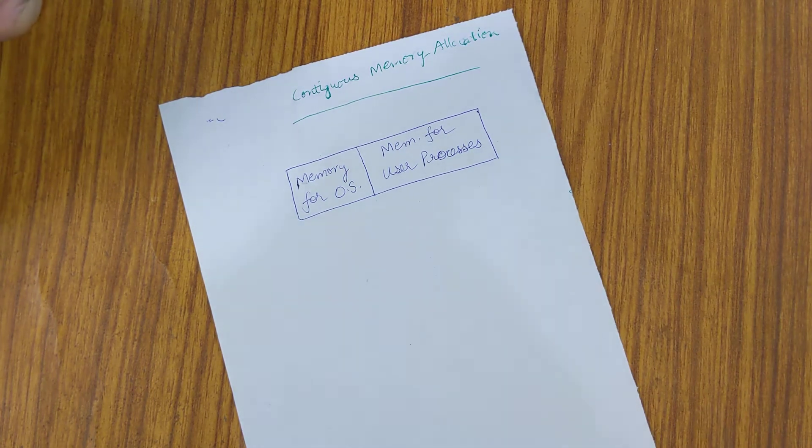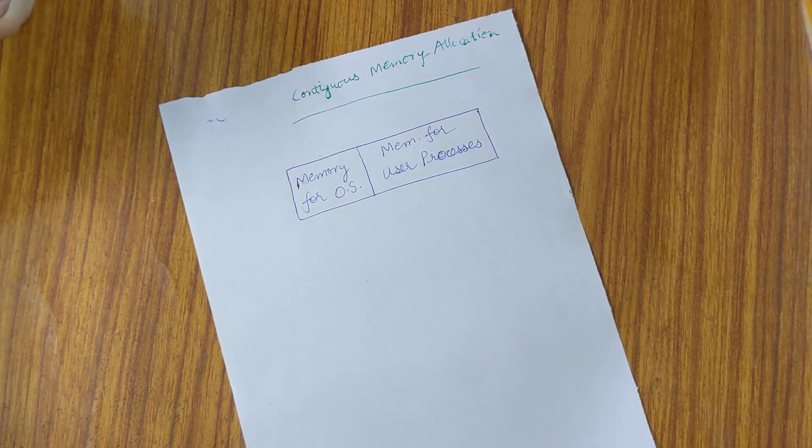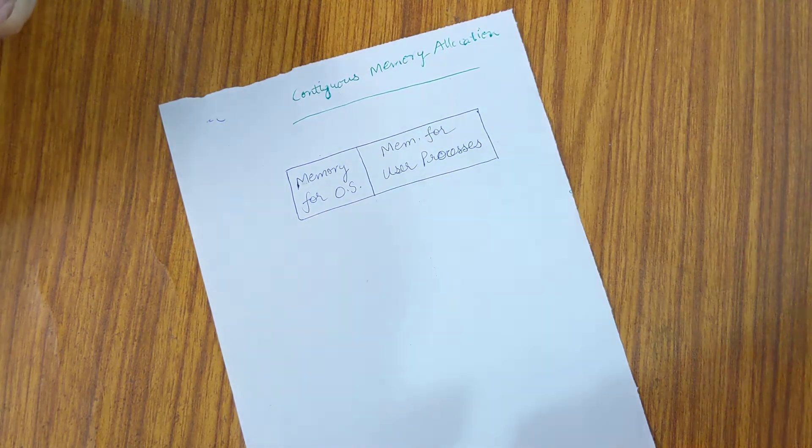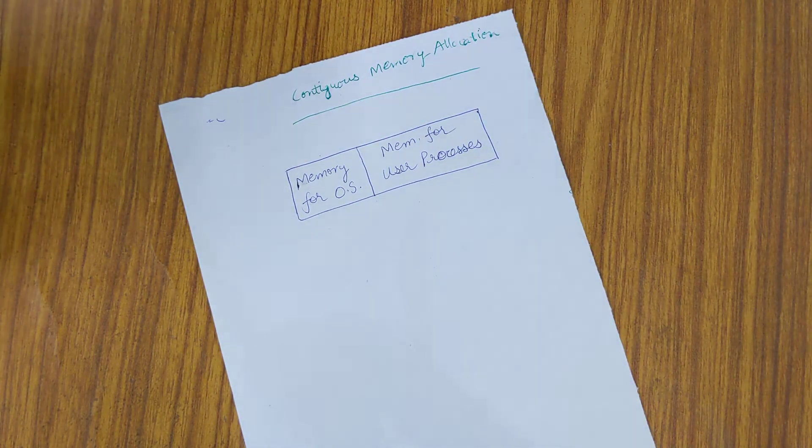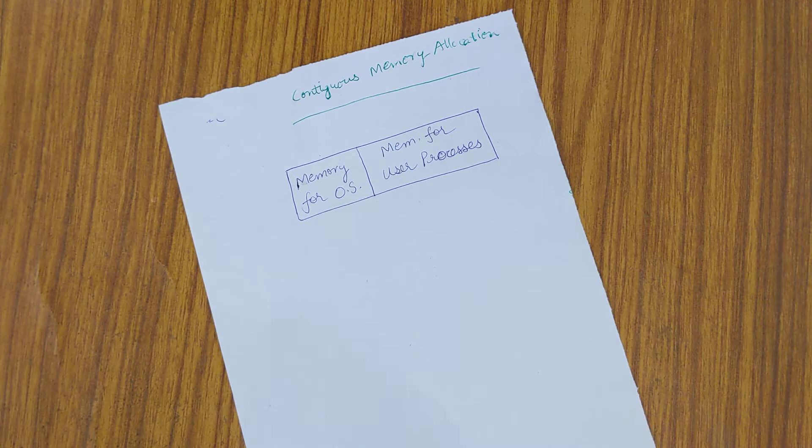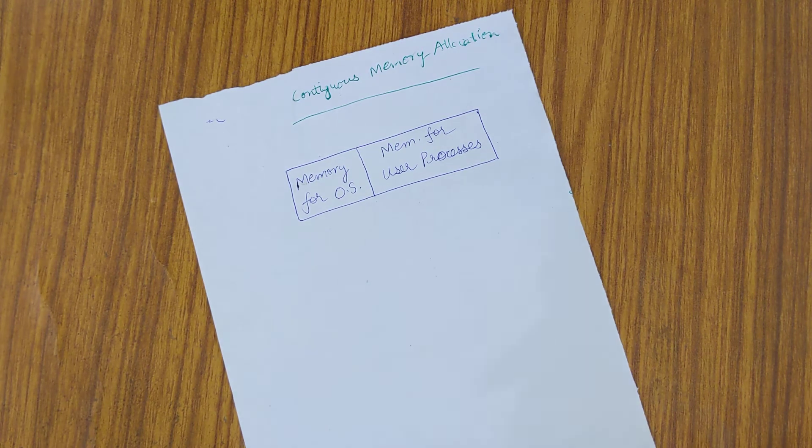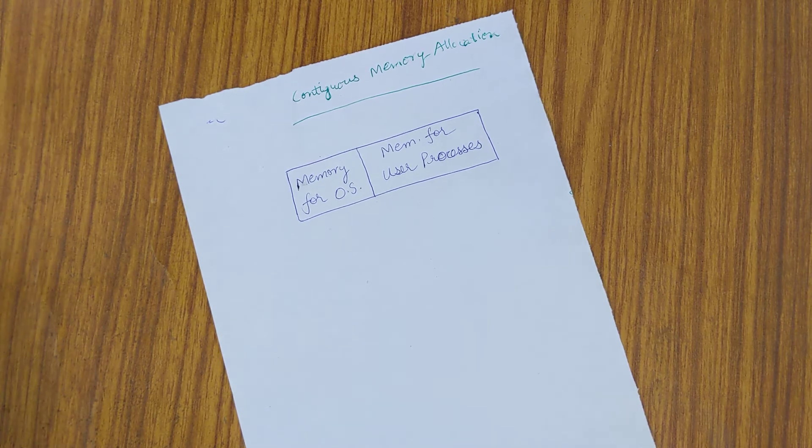In contiguous memory allocation, we have our memory to be allocated and we have two sections: one is the memory for the operating system and the other is the memory for our user processes.